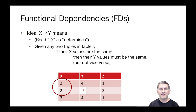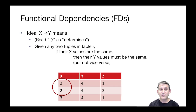The idea behind functional dependencies is really very simple. If we take two columns of a table R, let's say X and Y, we'll say that X determines Y, notated X arrow Y, if given any two tuples in R, if their X values are the same, then their Y values must be the same. In the example below, if the X value is 2, the Y value must be 4. So we can say that this table observes the functional dependency X determines Y. Note that this does not necessarily hold in the reverse direction — the value of Y says nothing about the value of X.